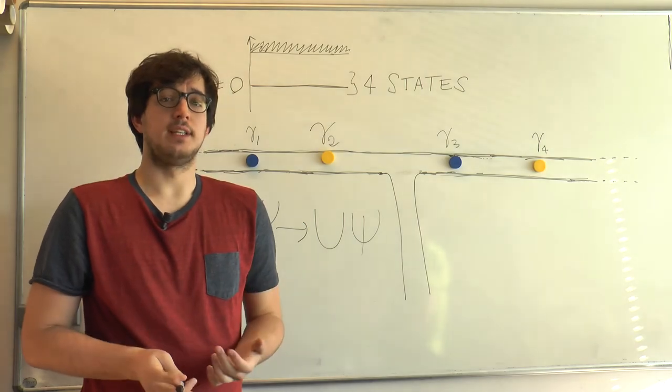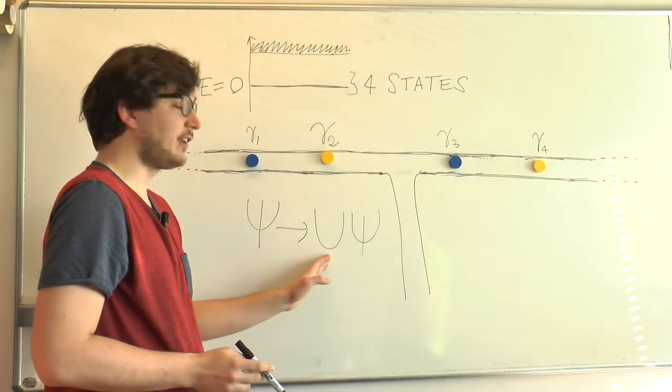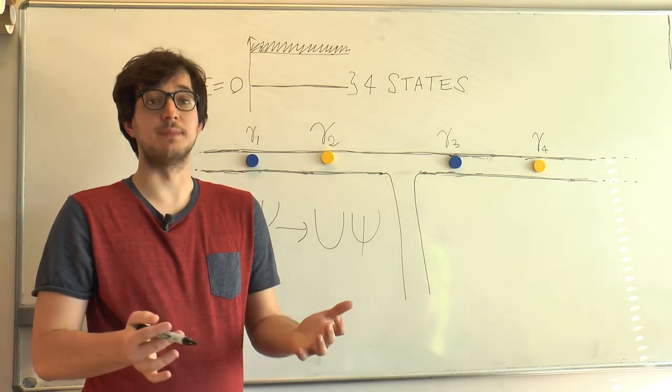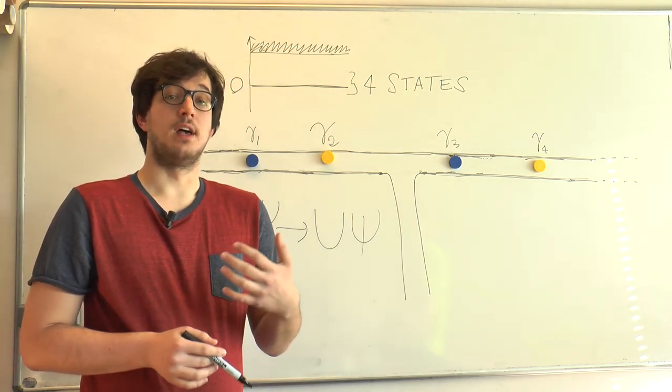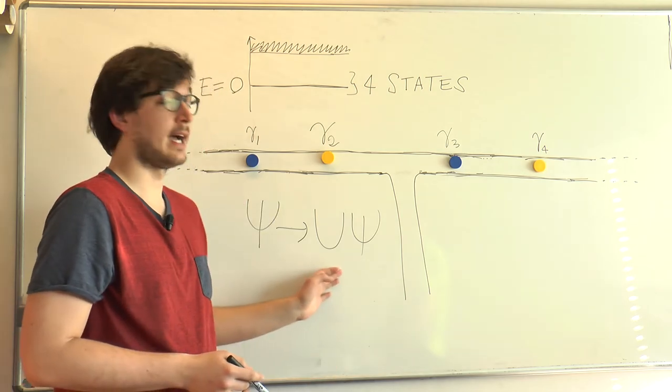Now, under this condition, it is entirely possible that this matrix U is not just a constant matrix, like 1 or minus 1, which you would have for bosons or fermions, but is, in fact, a rotation, which is applied to the wave function.